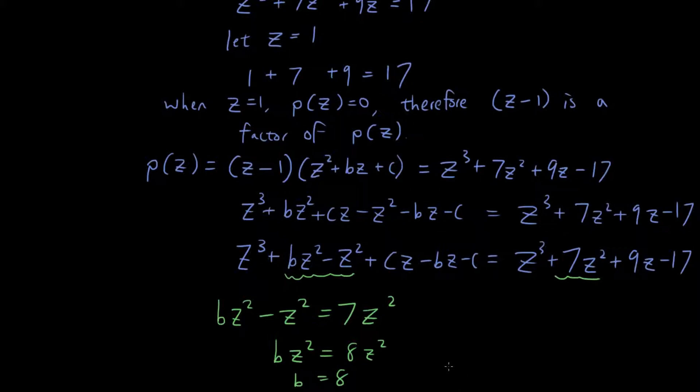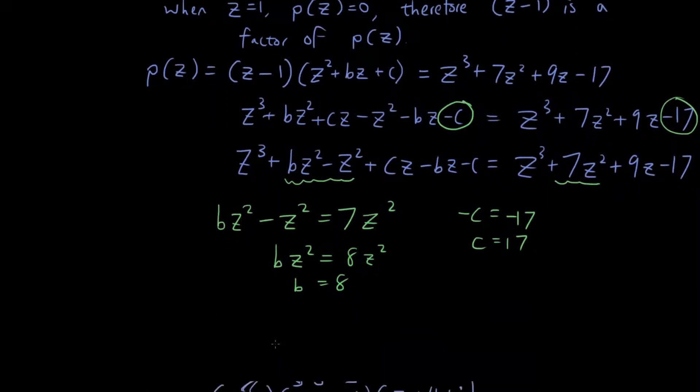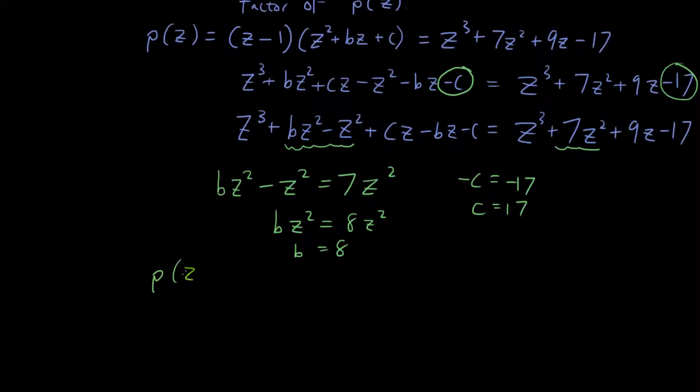b = 8. And then I have c = 17 because I have -c here and -17 here. So -c = -17, because c is the constant. So c = 17. So if I substitute the numbers for b and c back into this equation, then I will get p(z) = (z - 1)(z² + 8z + 17).